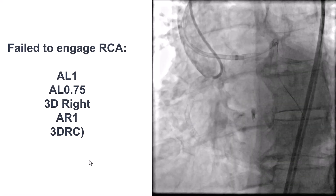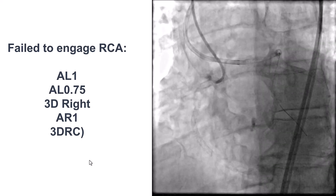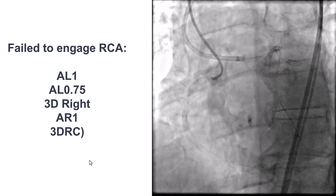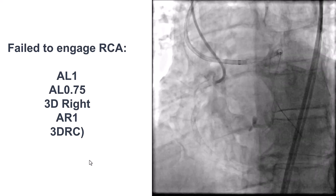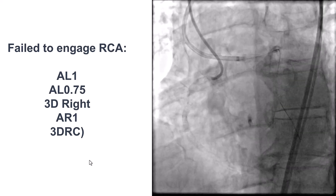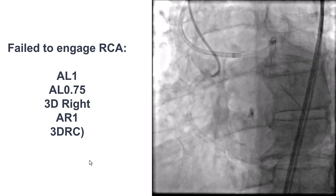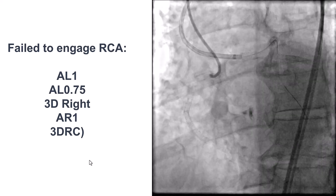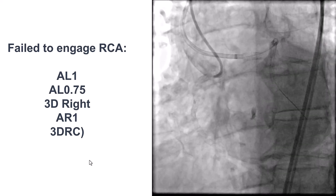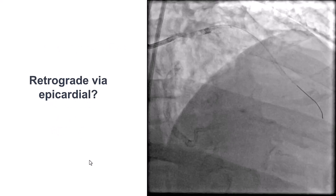At this point, we gave up on retrograde crossing attempts and tried to see if we could find some nub to engage in the antegrade direction. We used multiple guide catheters — AL1, AL0.75, 3D Right, AR1, 3DRC — but unfortunately we were unable to find a stump. It appeared that the occlusion was at the aorta without any stub.